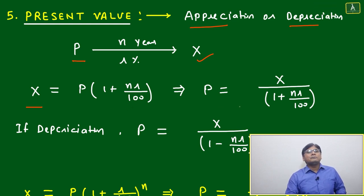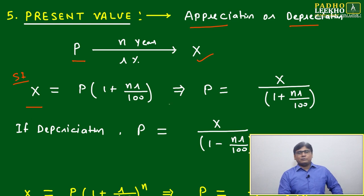What are we doing here? Are we doing simple interest or not? We are applying the compound interest: P times 1 plus nr by 100. This we are doing under simple interest. Both will be possible under simple and compound.